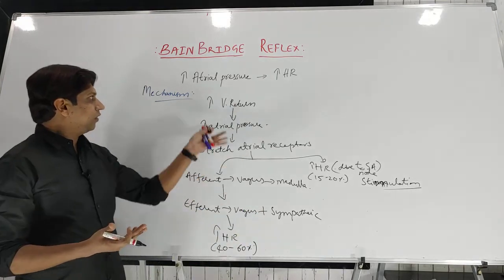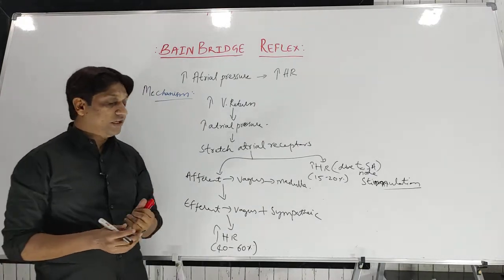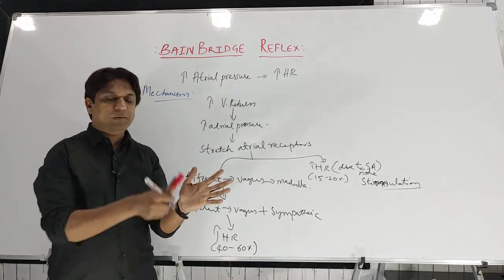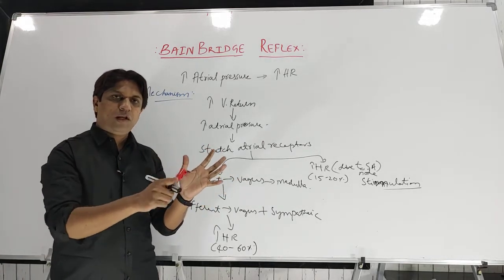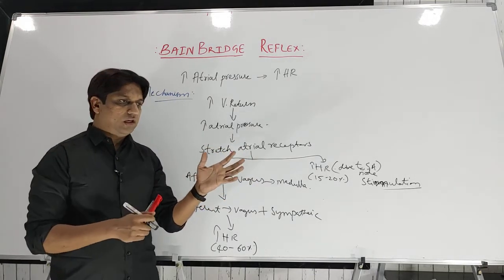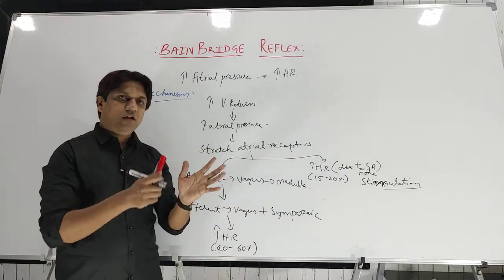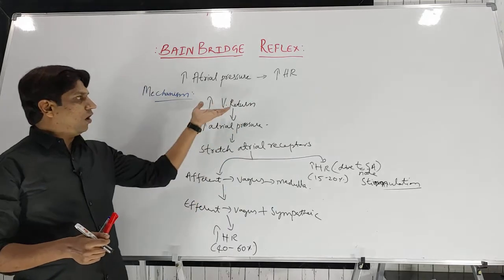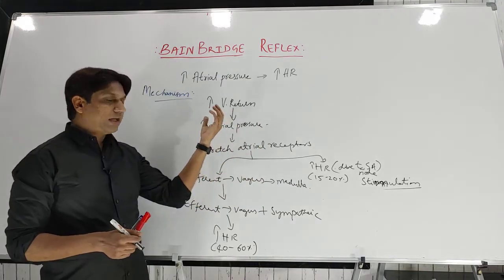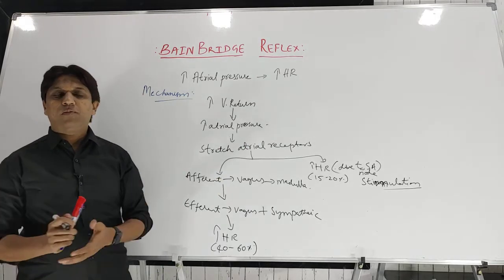The clinical importance of Bainbridge reflex: due to the increase in heart rate, it pumps blood and removes blood from the atria and veins. This prevents the damming of blood in the atria and the venous system, allowing atrial pressure to fall back to normal so more blood can return to the atria.